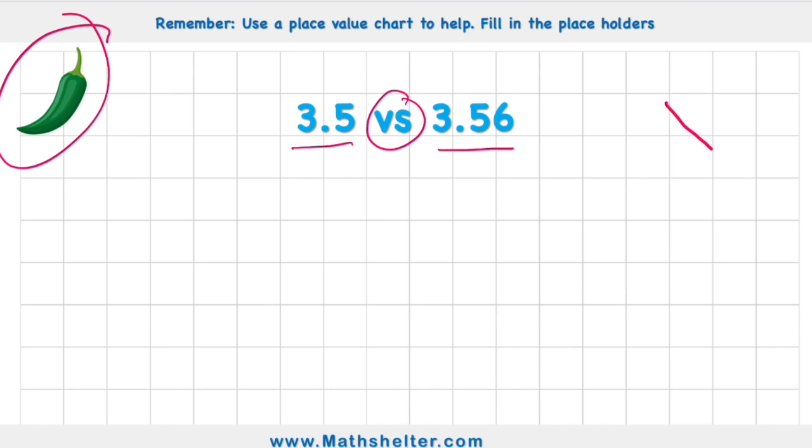We have the greater than symbol, which shows that something on the left hand side is greater than the value on the right hand side. We have the less than symbol, which shows whatever's on the left hand side is less than whatever's on the right hand side. And then our last one, can you guess it? That's right, it's our equals sign, which shows that something on the left has the same value as whatever is on the right.